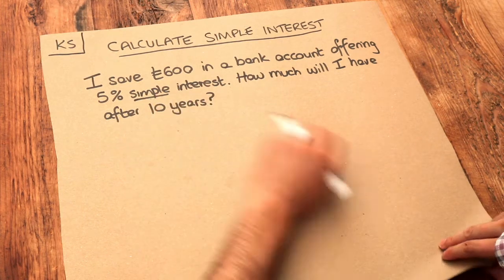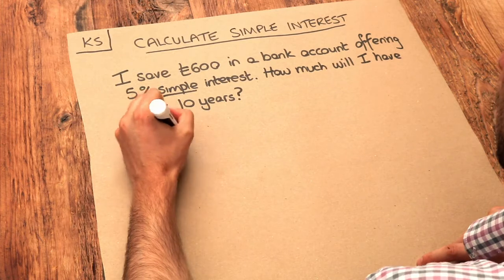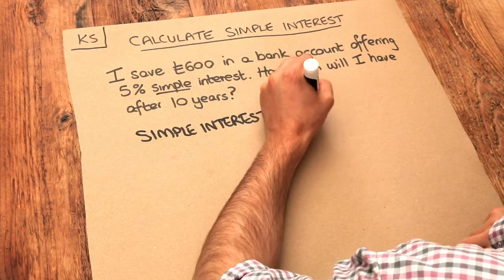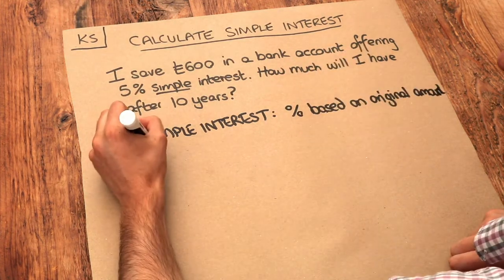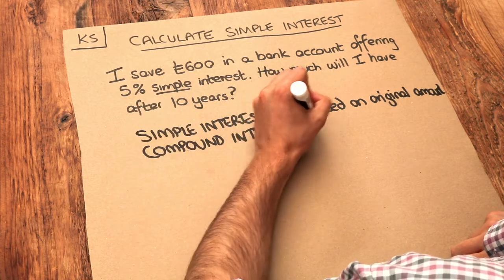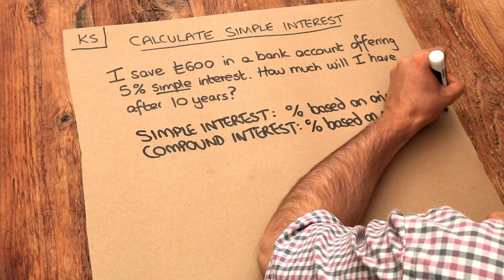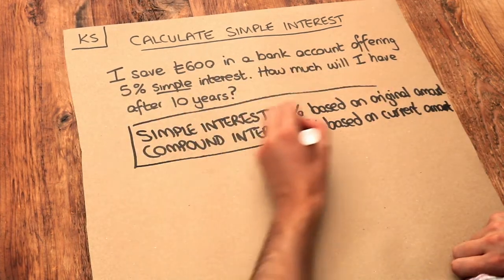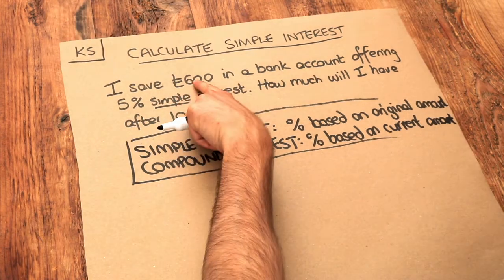Now there are two different types of interest: simple interest and compound interest. Simple interest is when the percentage is based on the original amount you have, whereas compound interest is where the percentage interest you get is based on the current amount. What I mean by that is that the 5% you get is based on the original £600 you put into the bank account.